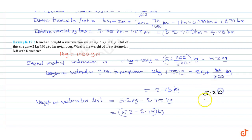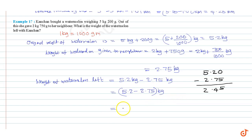5.2 minus 2.75. This is equal to 2.45 kg, which is also equal to 2 kg 450 grams.